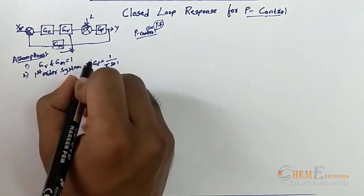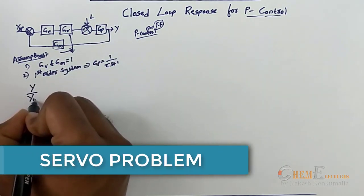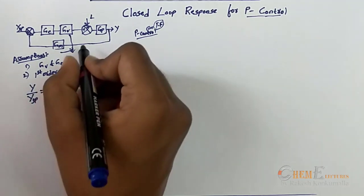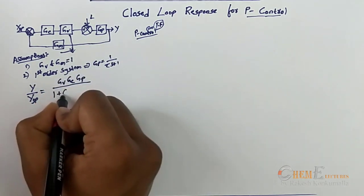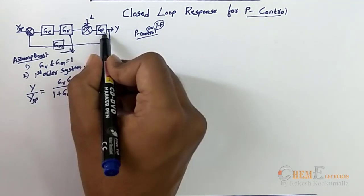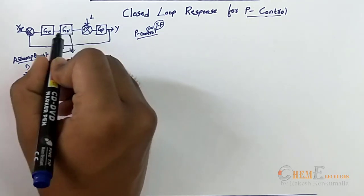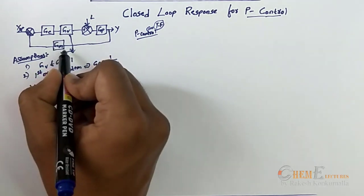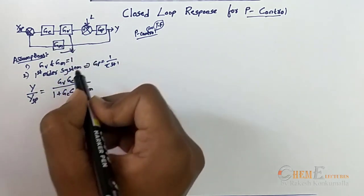From this, the closed loop transfer function Y by Ysp — that is output by input — will be: (GV * Gc * Gp) / (1 + Gc * Gv * Gp * GM). Here Gp is the process transfer function, GV is the final control element transfer function, Gc is the controller transfer function, and GM is the measuring element transfer function. These are the common notations discussed in previous lectures.